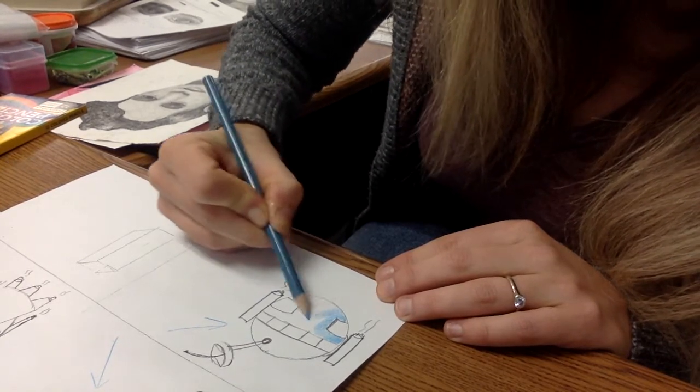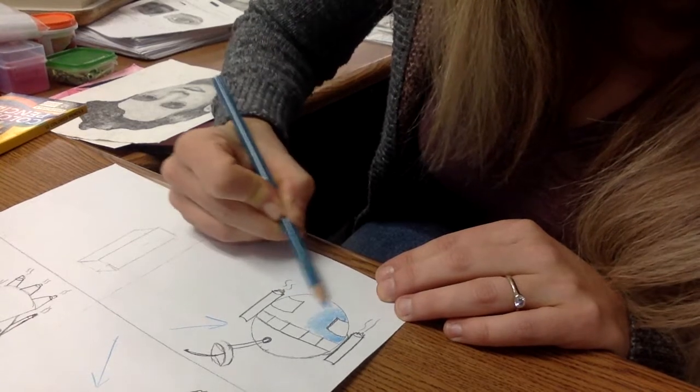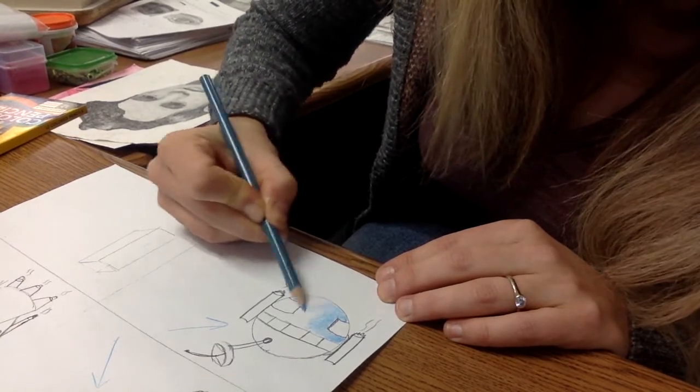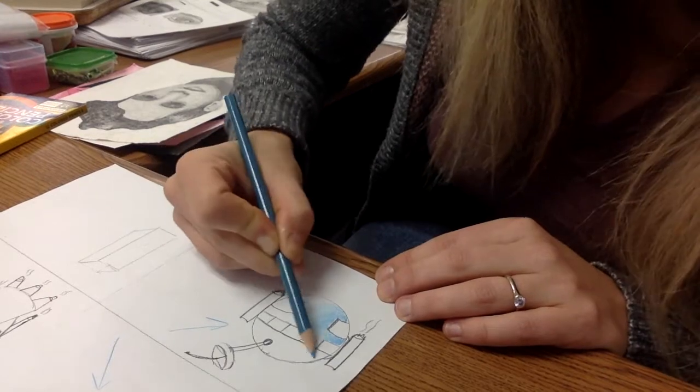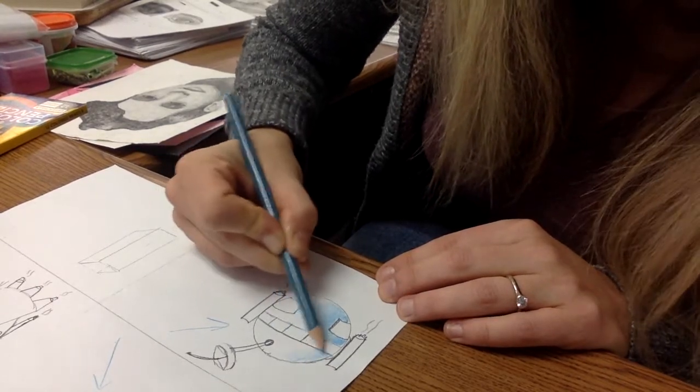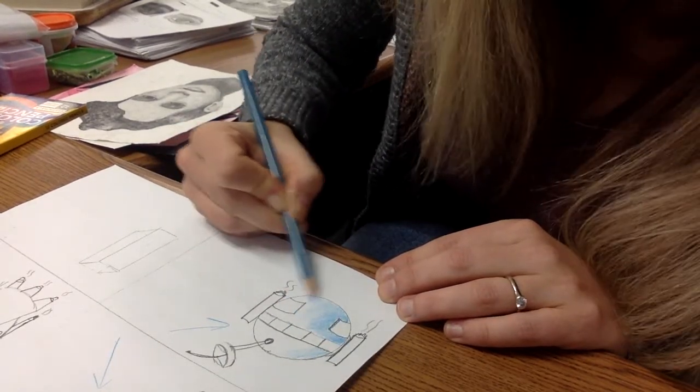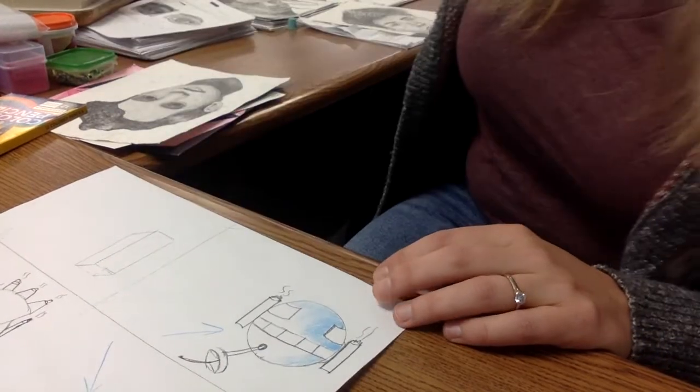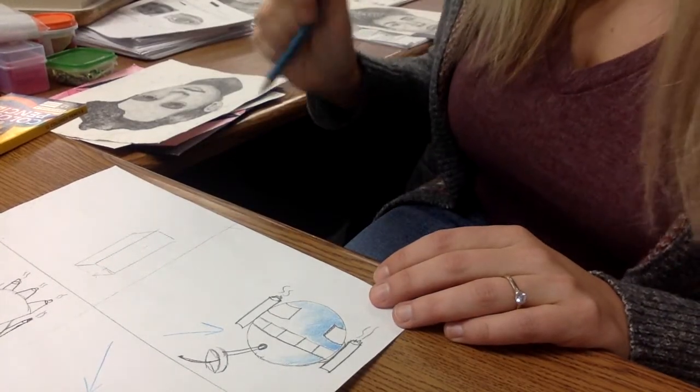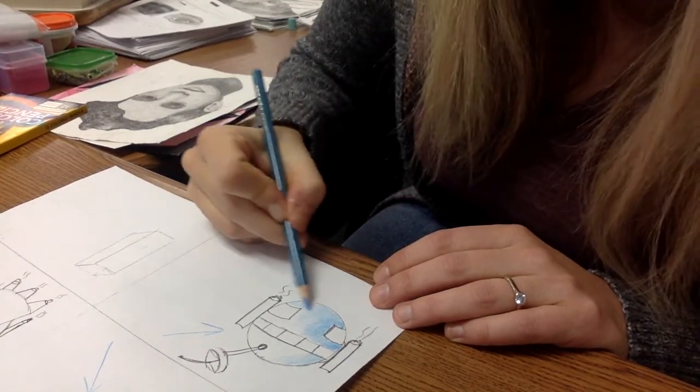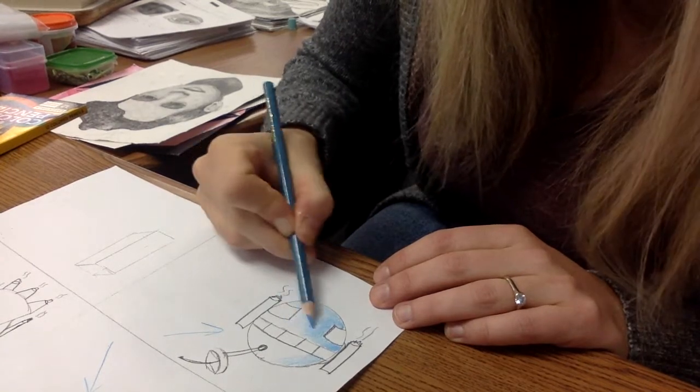If I can't tell where your light source is coming in, then it's going to look flat. There is one person in first period who had theirs all drawn out. They also had their colored pencil done. I'm here to tell you it looked a little rough.